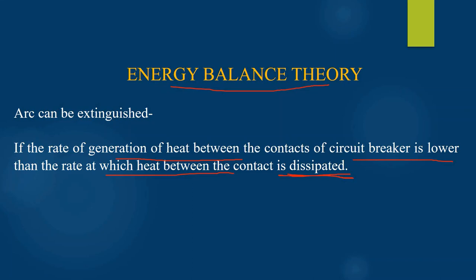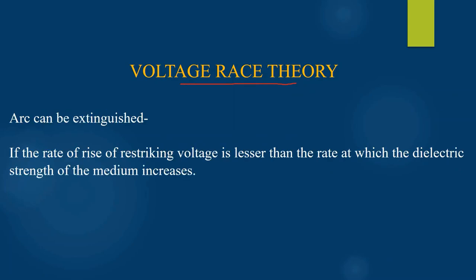According to the voltage raise theory, the arc can be extinguished if the rate of rise of the re-striking voltage is lesser than the rate at which the dielectric strength of the medium increases. To achieve this, ionized particles are caused to recombine into neutral molecules — in this way there will be fewer ionized particles between the two contacts of the circuit breaker. Also, by removing the ionized particles and replacing them with unionized particles, we can increase the dielectric strength.